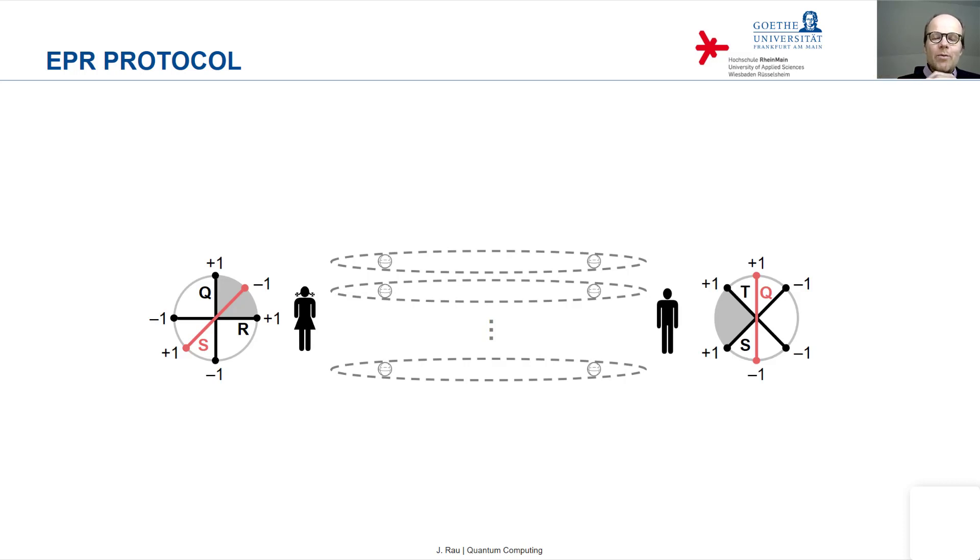Because this Bell state beta 11, this is the Bell state with perfect anti-correlation.